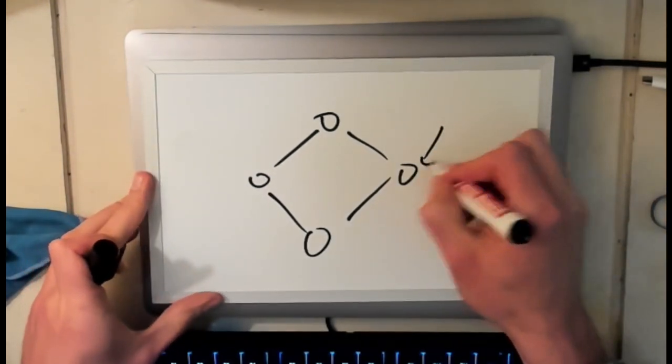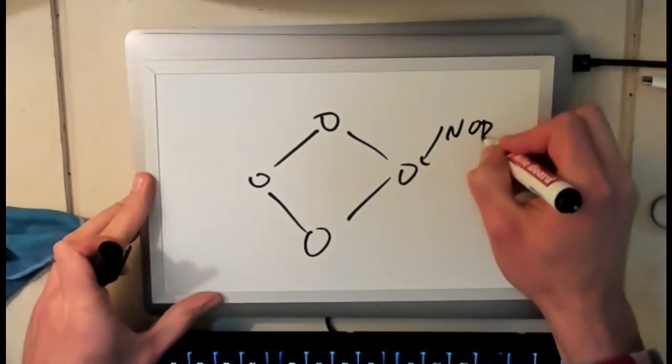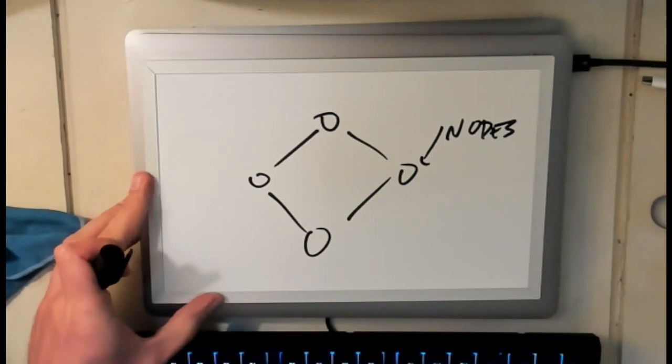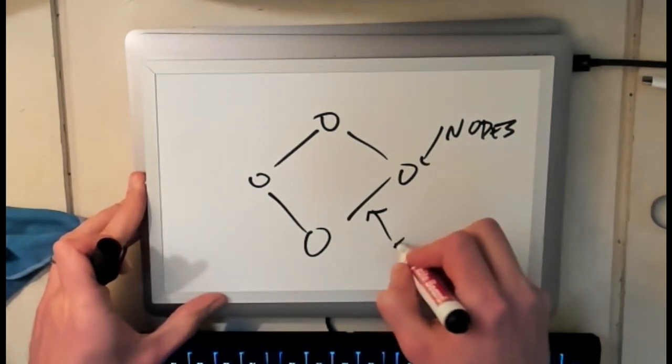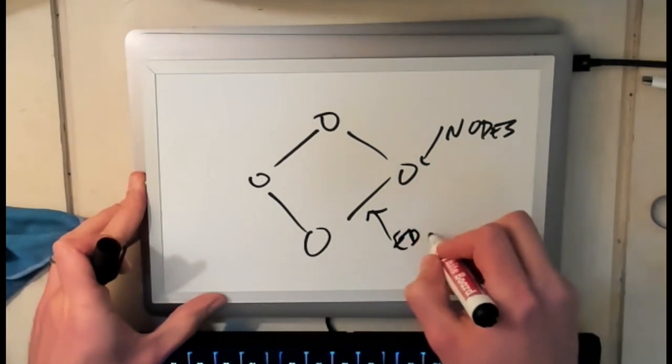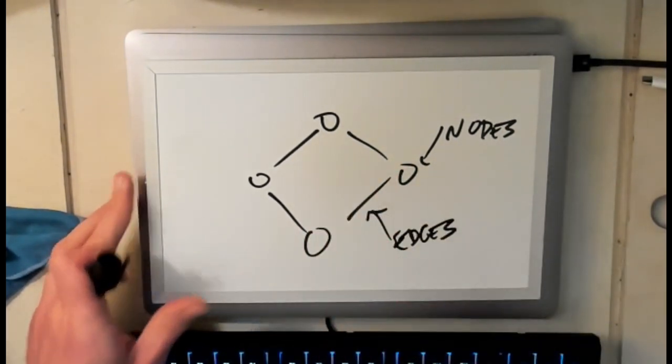These are nodes, we'll refer to as nodes, sometimes also called vertices, and then these connections between nodes we'll refer to as edges. Nodes and edges.